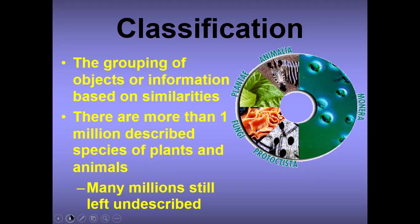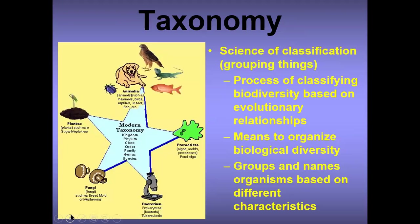Imagine for a minute a world where nothing is classified — we're just existing. What do you think would happen? Think about it for a moment. Taxonomy is the science of classification — a very important term. It's the process of classifying biodiversity based on evolutionary relationships. Taxonomy also means organizing biological diversity; it groups and names organisms based on different characteristics that they possess.